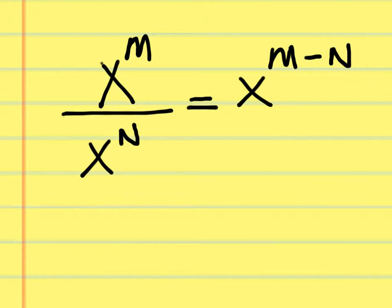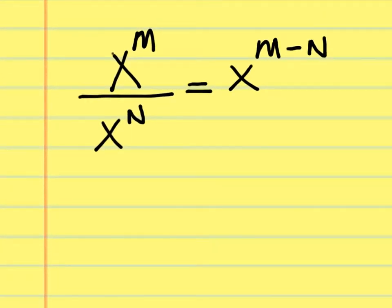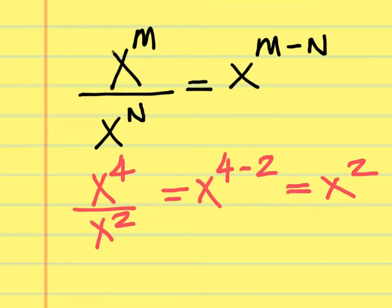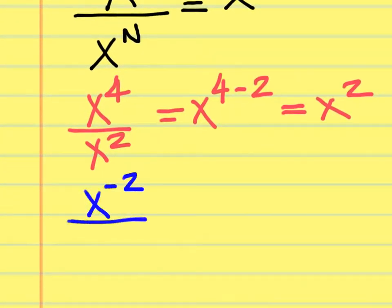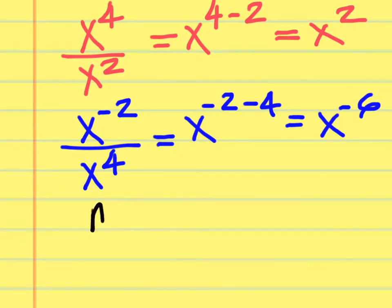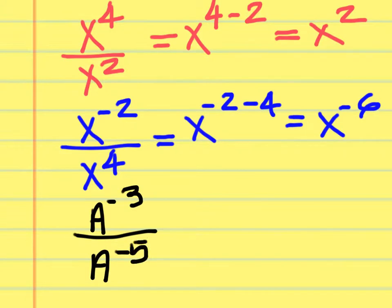Rule 2 is about division. When you divide the same base over the same base — x to the m power over x to the n power — the result is x to the m minus n. For example, x to the fourth over x to the second is x to the 4 minus 2, which is x squared. And x to the negative 2 over x to the fourth is x to the negative 2 minus 4, which is x to the negative 6. Also, a to the negative third over a to the negative fifth is a to the negative third minus negative fifth.